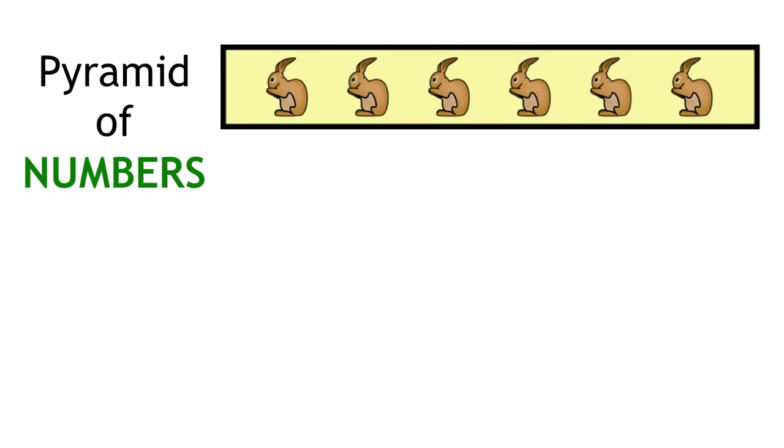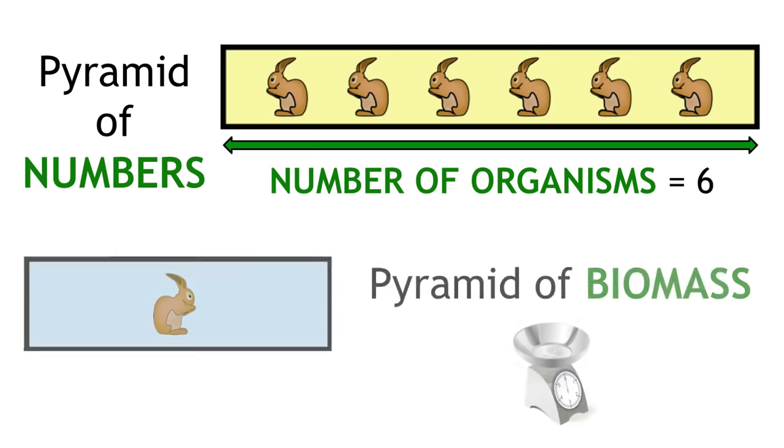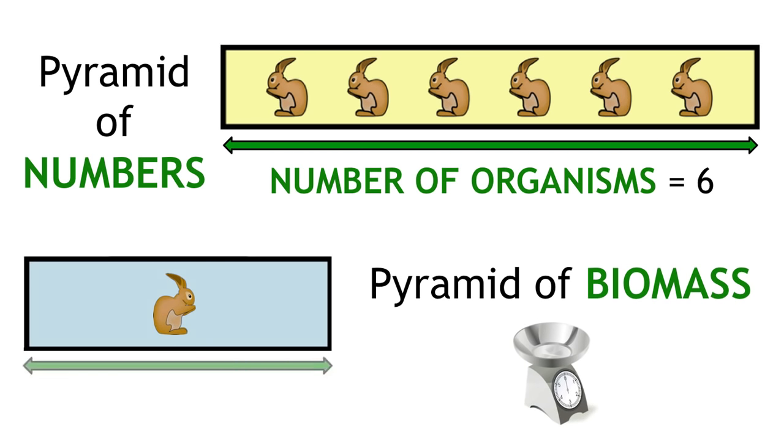So, for an ecological pyramid of numbers, the width of the bar shows the number of organisms at that step in the food chain. The unit for this is number of organisms. In the pyramid of biomass, it shows the biomass of organisms, and the common unit for this is grams per metre squared.